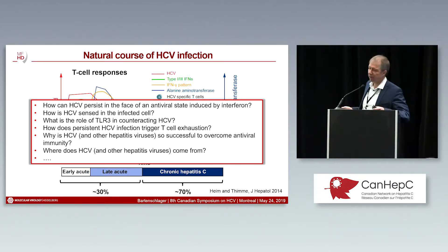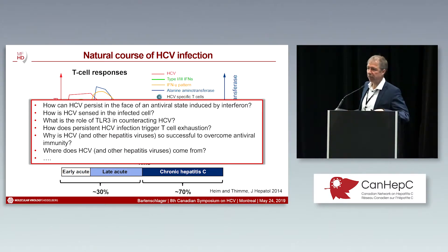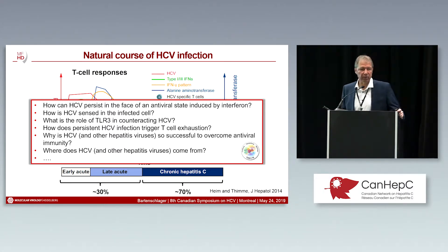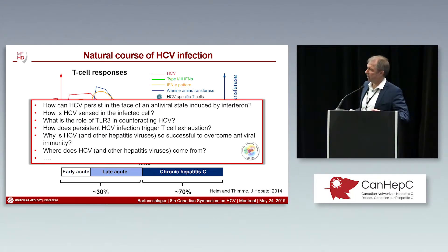Some of those questions I've listed here: How can the virus persist while the interferon system is activated? How is the virus actually sensed in the cells? What is the sensor — the pattern recognition receptor? Is there a role for TLR3? How does HCV drive T cell exhaustion? Why is HCV so successful in overcoming the immune response, given that 70% of infections become chronic? And lastly, there's an evolutionary aspect: where does HCV come from? Most of these questions have been studied within a research network called Transregio 179, which has entered into a collaboration with CAN-HEP-C, allowing exchange of students between Heidelberg and Canada.